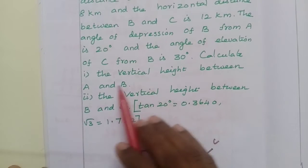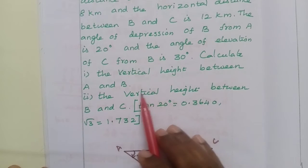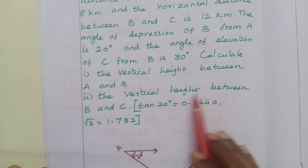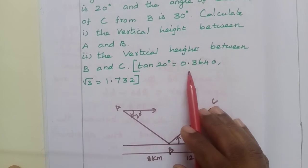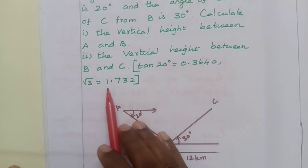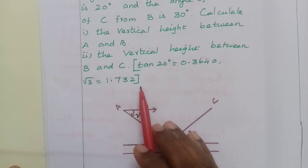Calculate the vertical height between A and B. Second one, the vertical height between B and C. tan 20 degrees equals 0.3640, root 3 equals 1.732.